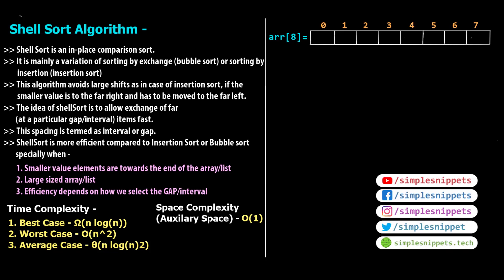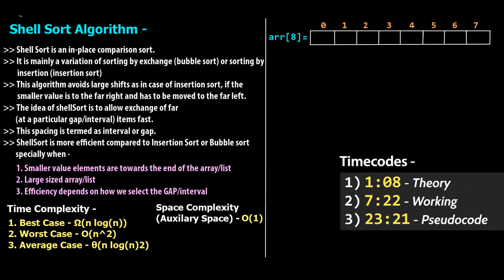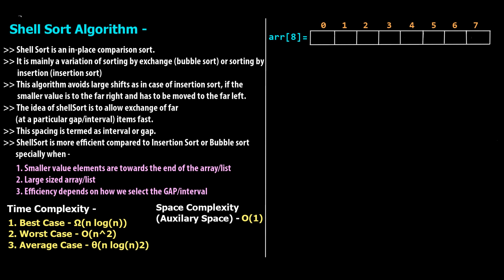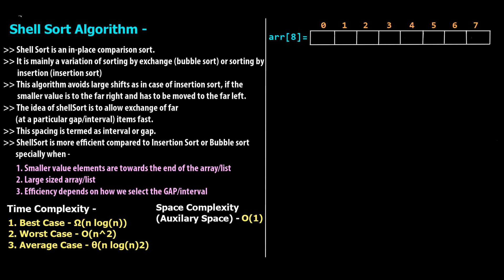Welcome back to another video tutorial on data structures and algorithms. Today's topic is shell sort. We're going to divide this into two parts - two videos. This first part covers the theory, working, pseudocode and a step-by-step visual dry run with a diagram. In part two we will convert this pseudocode into a C++ program, just as we've been doing in previous DSA tutorials.